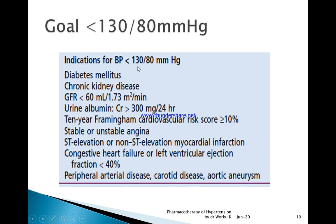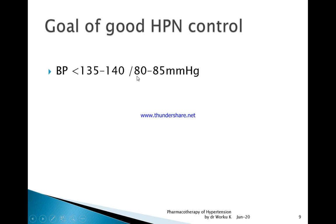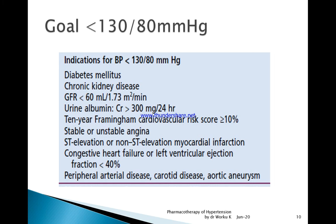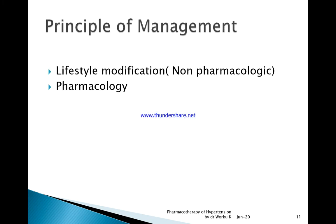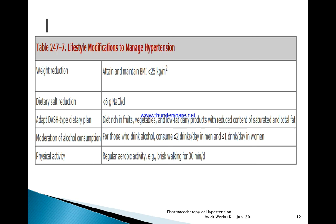For patients with diabetes, chronic kidney disease, or significant proteinuria, the target is less than 130 by 80 mmHg. For patients without these conditions, the target can be between 135–140 by 80–85 mmHg. Age also matters — older patients have a slightly higher tolerance. The principles of management include lifestyle modification, which is non-pharmacological, and pharmacological management.